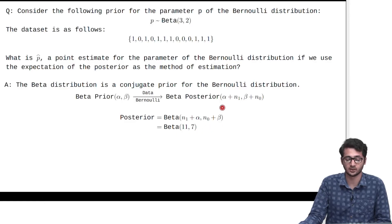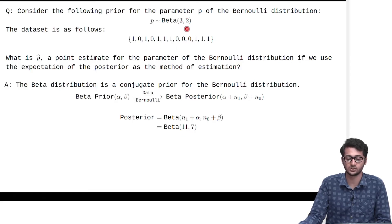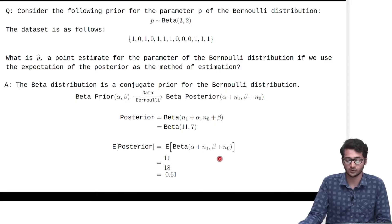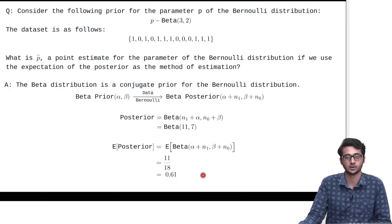If we have a Beta prior (alpha, beta) along with the data, we get a Beta posterior of (alpha + n1, beta + n0), where n1 indicates the number of 1s in the dataset and n0 indicates the number of 0s. First, we find the posterior distribution. In this dataset, we have 8 ones, so 8 plus 3 gives 11, and 5 zeros with beta value 2 gives n0 plus beta as 7. So the posterior is Beta(11, 7). The expectation of the posterior is (alpha + n1) / (alpha + n1 + beta + n0), which is 11/18, giving us a value of 0.61.